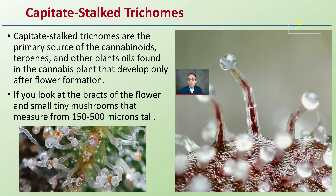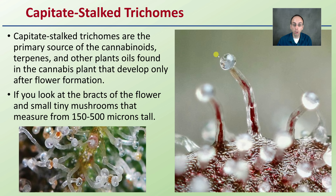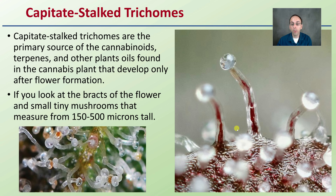These are the highlight ones that most growers are seeking out: the capitate-stalked trichomes. They are the primary source of cannabinoids, terpenes, and other plant oils found in cannabis, and develop only after flower formation. These are the key ones for determining peak harvest — going from clear to cloudy, and if they go a little beyond, to an amber state. Found on the bracts of the flower, they resemble small tiny mushrooms measuring about 150 to 500 microns tall, much taller than the other types, which makes them great for visual inspection.